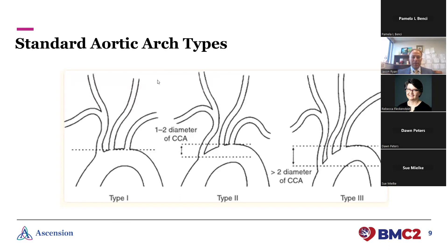These next slides are the meat and potatoes as far as determining an arch type. One problem you may run into is that if you're trying to abstract an arch type from a chart, it's not commonly discussed in a normal radiology report. I don't typically verbalize the arch type when I look at an angio or image, though it's something you think about when determining whether a patient is suitable for a transfemoral intervention. It's probably not something that gets recorded very often in the medical record.